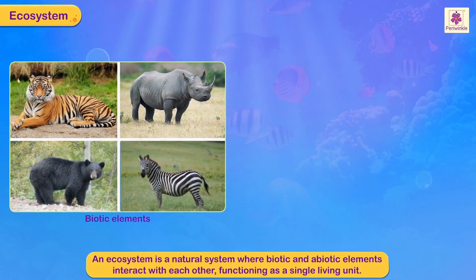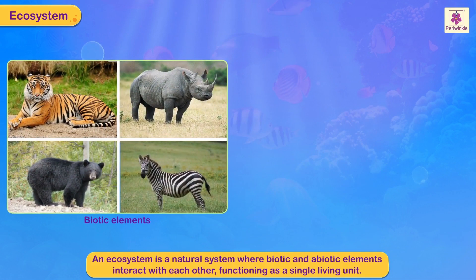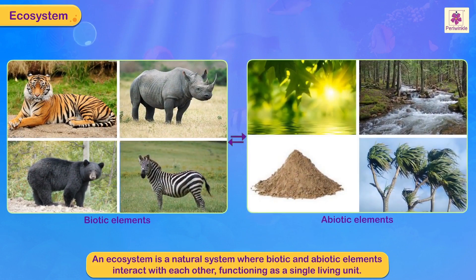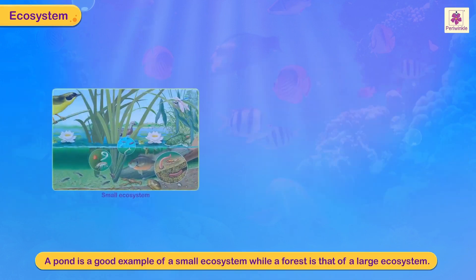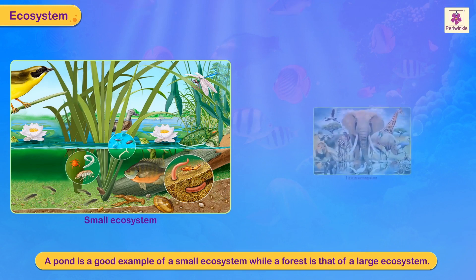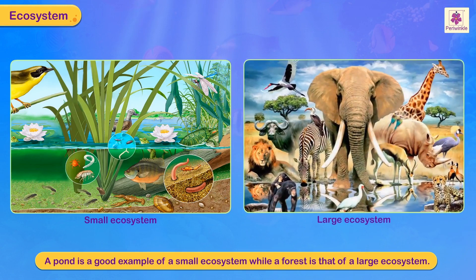An ecosystem is a natural system where biotic and abiotic elements interact with each other, functioning as a single living unit. A pond is a good example of a small ecosystem, while a forest is that of a large ecosystem.